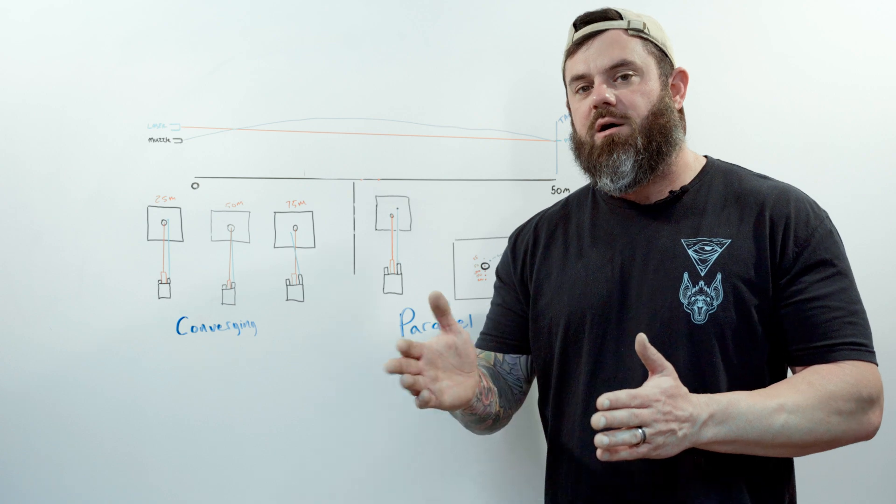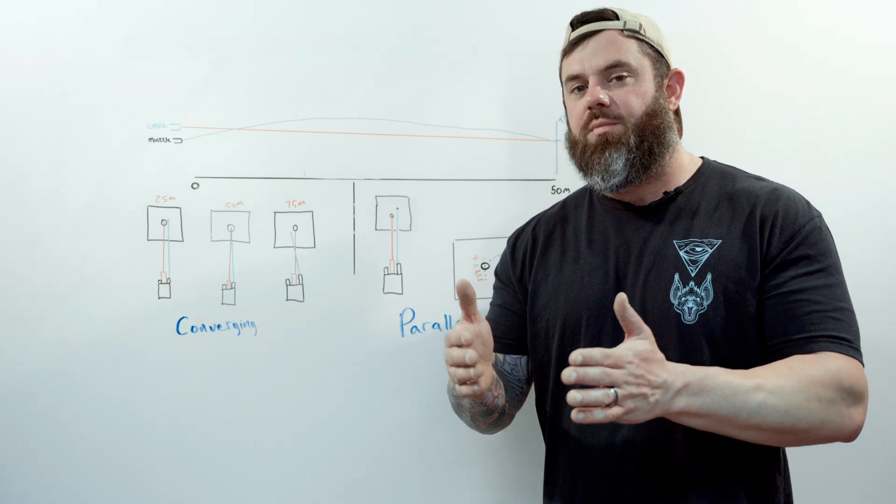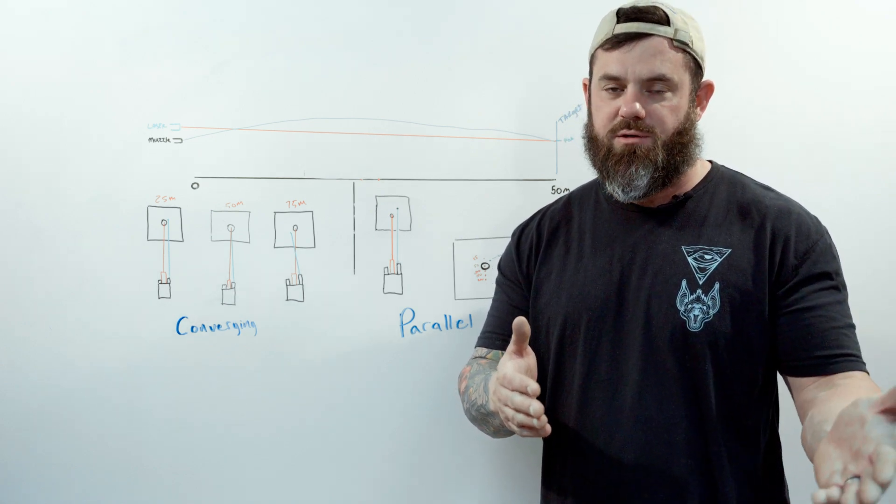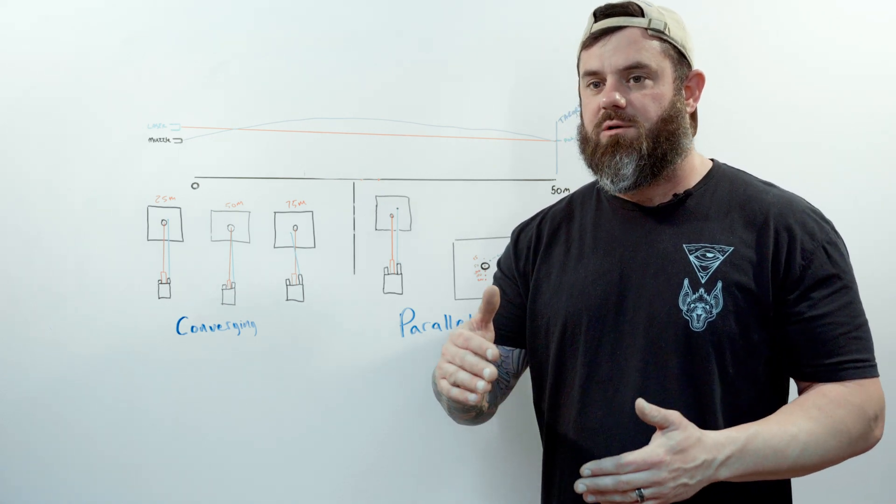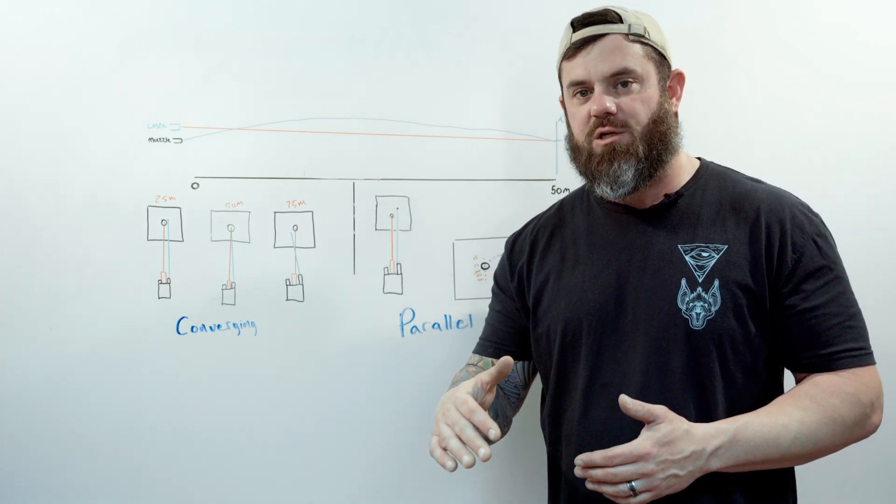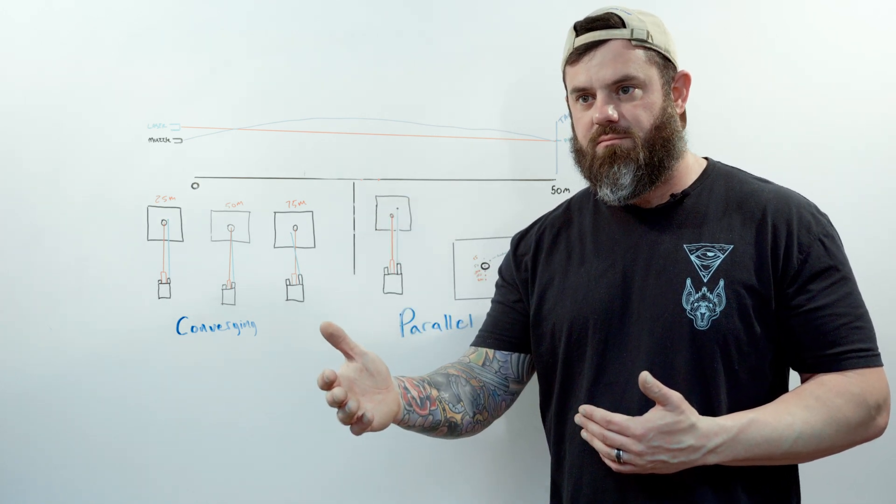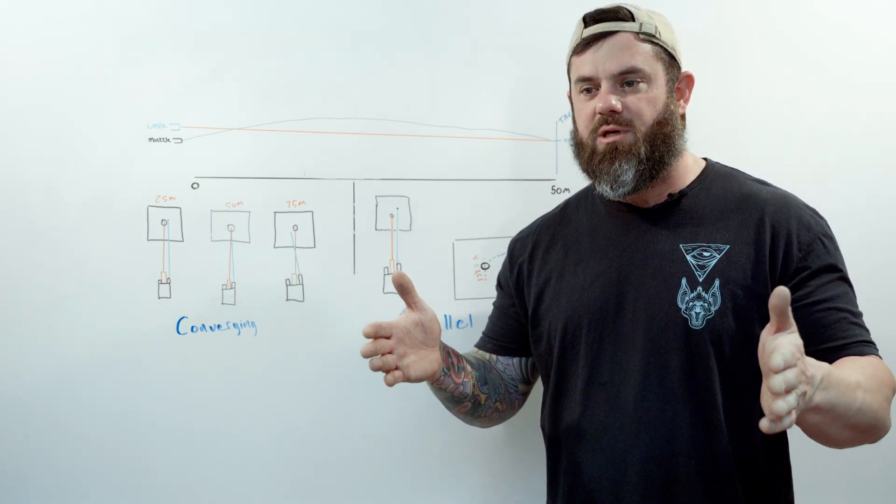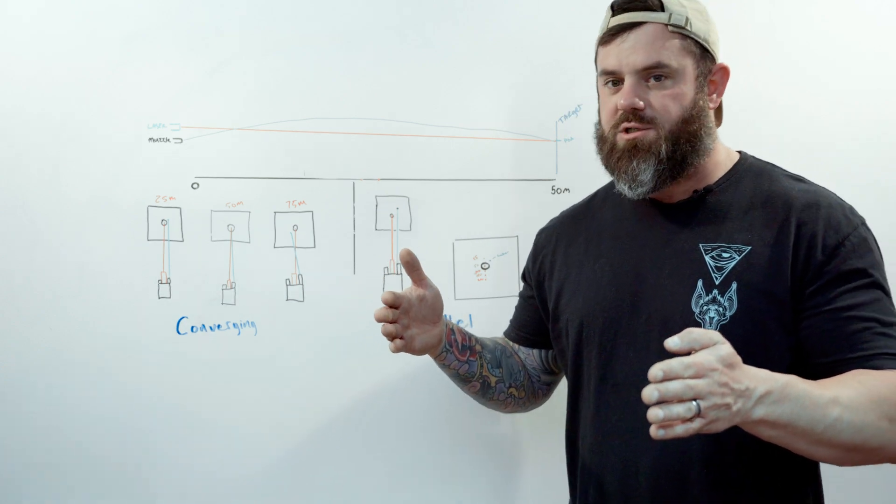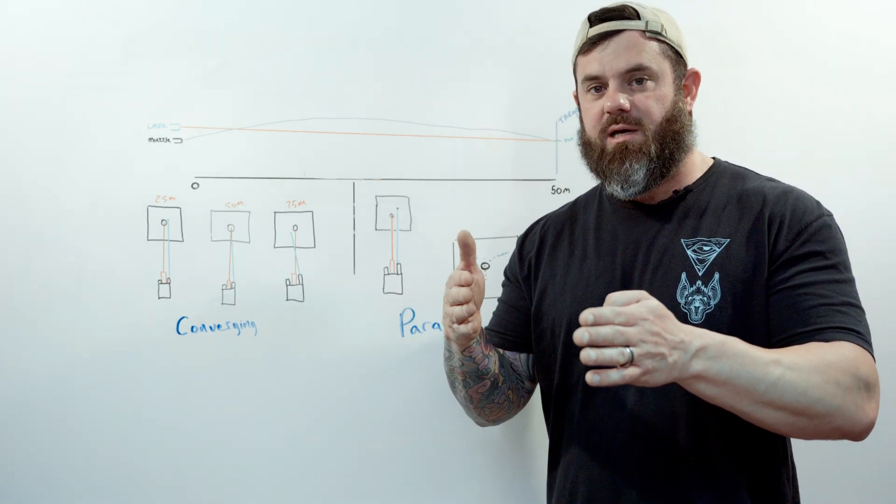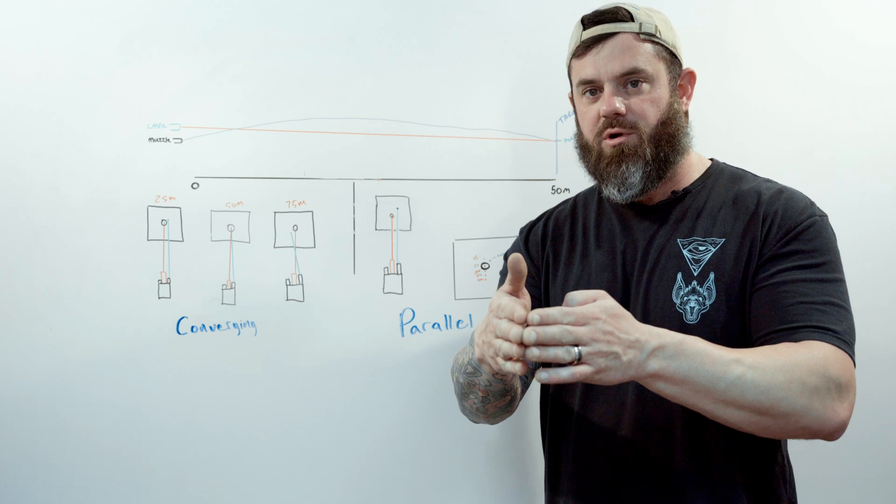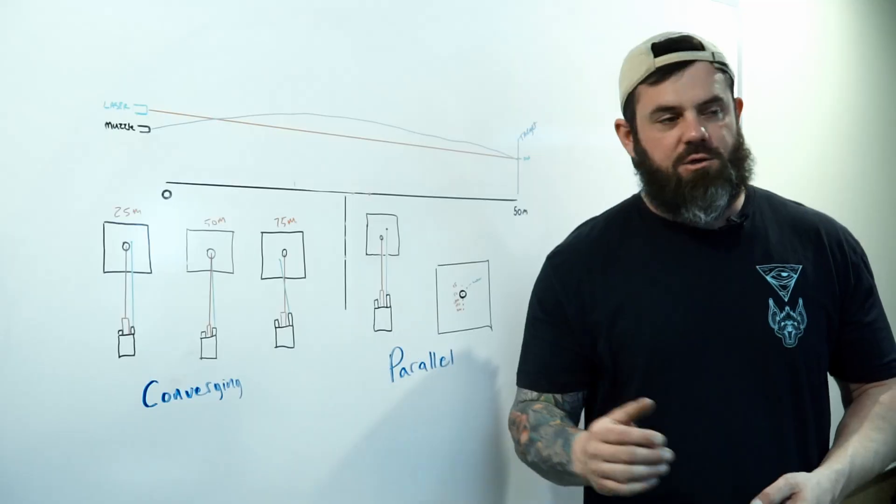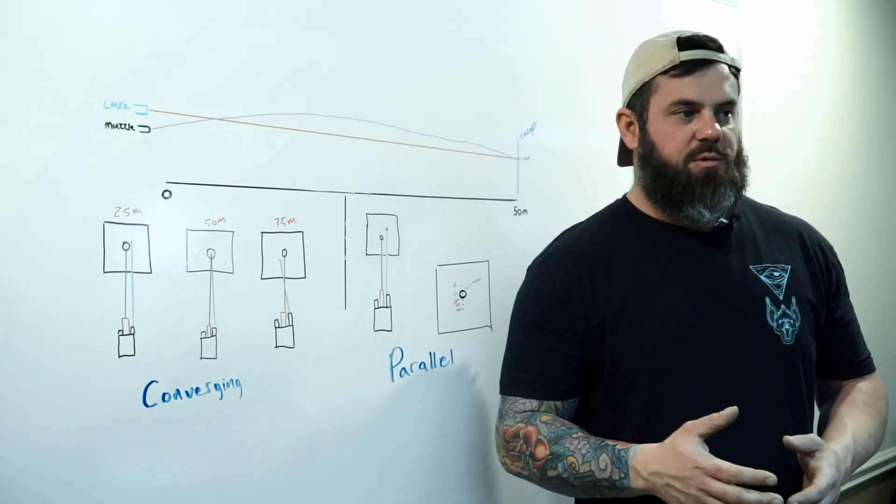So not only are you dealing with the typical bullet drop change in elevation over distance with any firearm, now you're having to account for a zero shift left to right because the convergence of your aiming laser is actually intersecting your point of aim or point of impact and then continuing on past it. I drew some diagrams. We'll go over that in a little bit more detail in a minute.